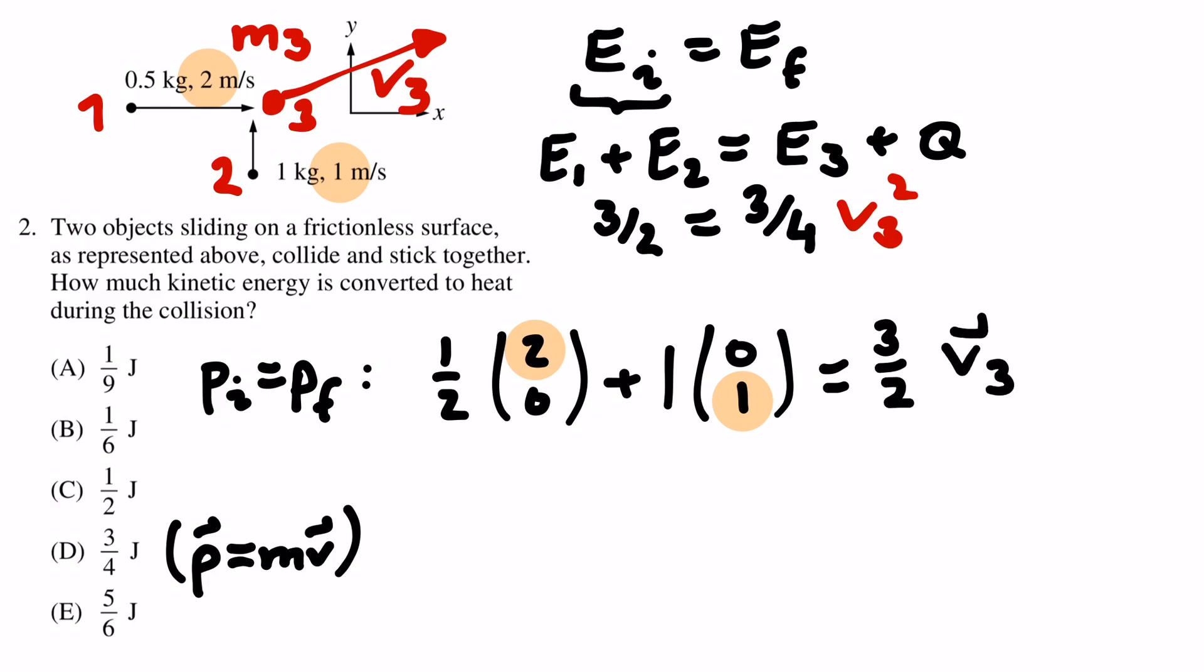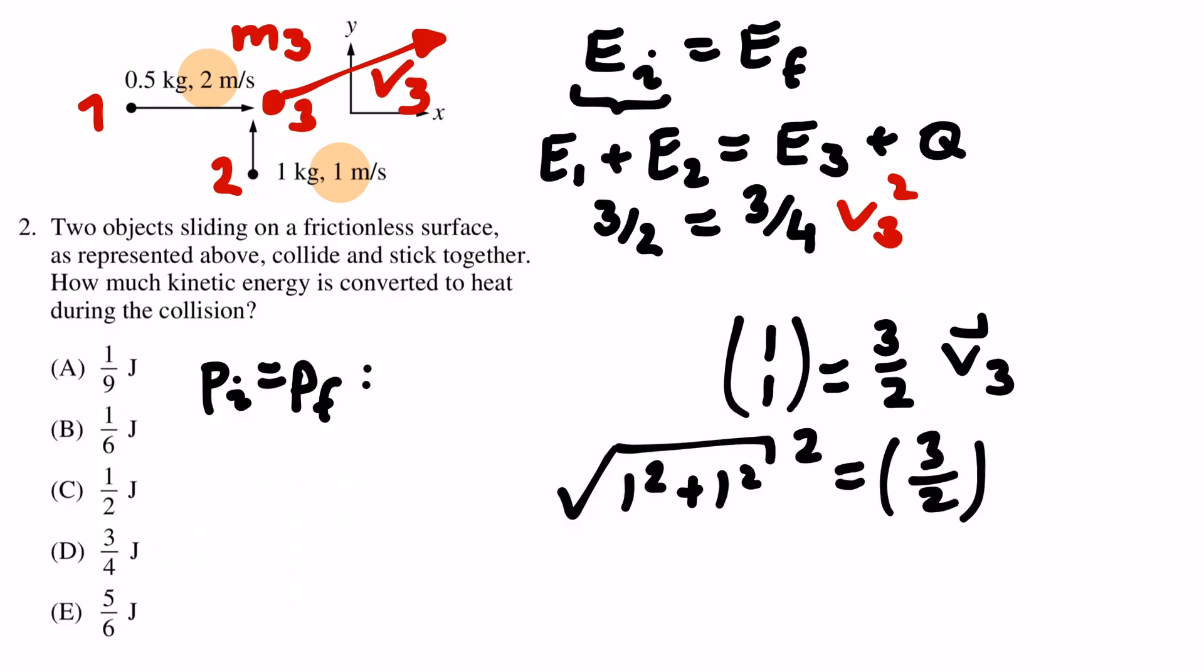We are not interested in the components of v3, so we square the equation, which gives us 2 on the left hand side, and if we rearrange a bit, we see that v3 squared equals 8 over 9.